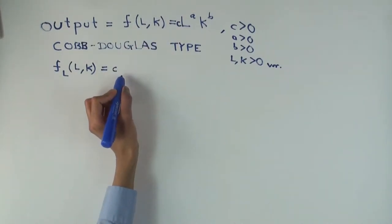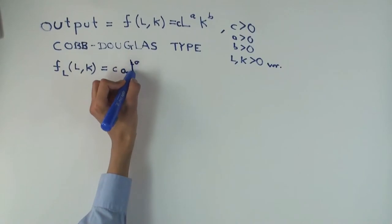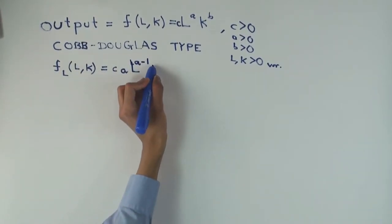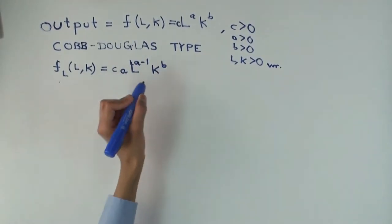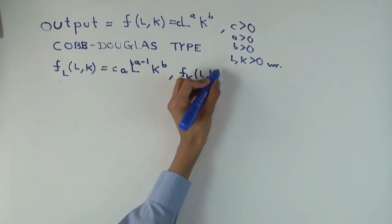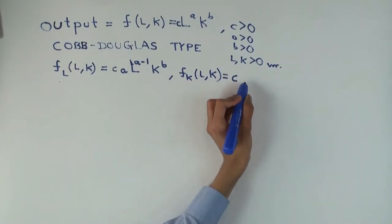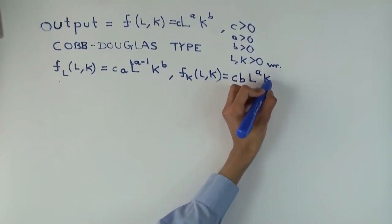So what's the partial with respect to L? Well, it's c times a times L to the a minus one times K to the b. f sub K is c times L to the a, you can roll the b out, times K to the b minus one.